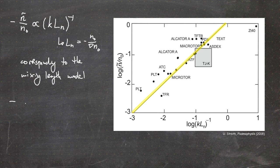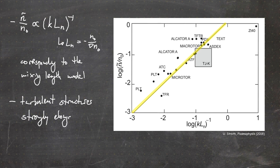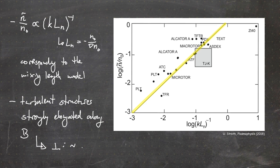In addition, it was found that turbulent structures are strongly elongated along the magnetic field line. This can be made visible, for example, when you do a gas puff at the edge and look at the H-alpha emission. The perpendicular structure size is usually on the order of centimeters, whereas the parallel structure size is usually on the order of meters — so strongly elongated along the magnetic field line.